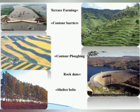In this picture, we can see terrace farming, contour barriers, contour ploughing, rock dam, and shelter. This picture shows many of these conservation methods together.